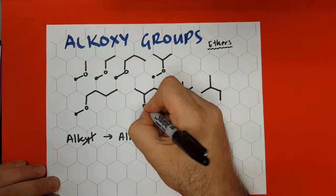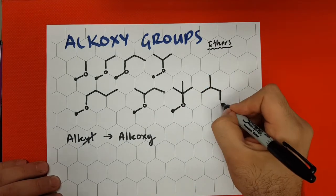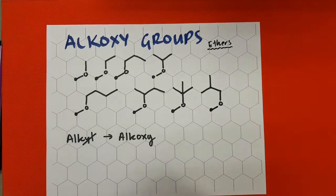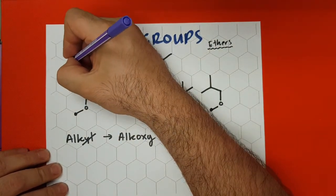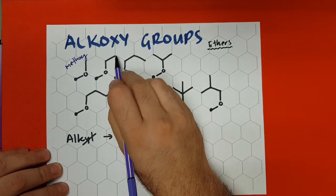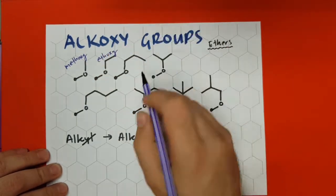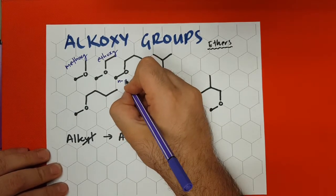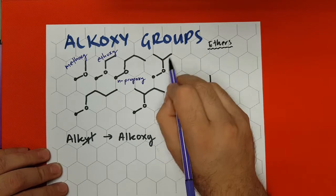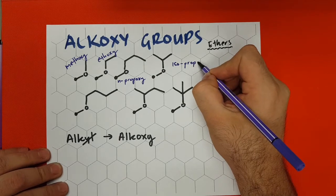Remember, these groups are substituents, so they have to be named using alphabetical order when we're naming ethers. I'm drawing skeletal formulas, that's why they look this way. So here we have methoxy. This would be ethyl with the oxy in the middle — substitute the L for oxy — ethoxy. This is n-propyl, but since we have the oxygen in the middle, n-propoxy. Here we have isopropyl with the oxygen in the middle — isopropoxy.